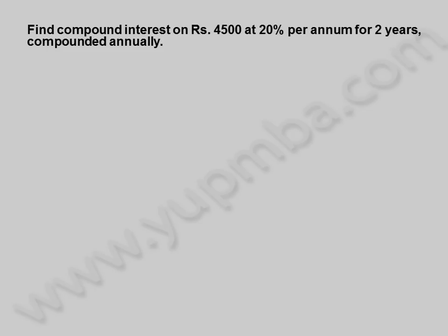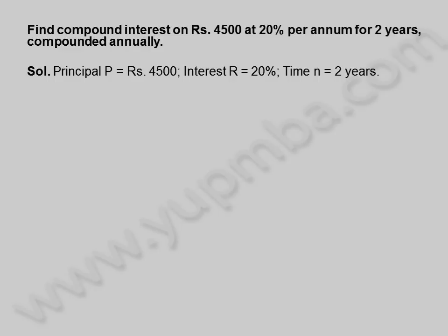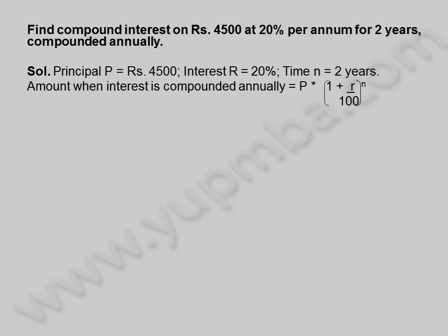Find compound interest on 4,500 rupees at 20 percentage per annum for 2 years, compounded annually. Principal P is equal to 4,500 rupees. Interest R is equal to 20 percentage. Time N is equal to 2 years. Amount when interest is compounded annually is equal to principal into 1 plus R by 100, whole power N.